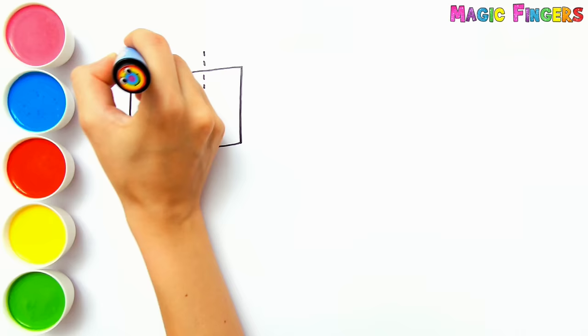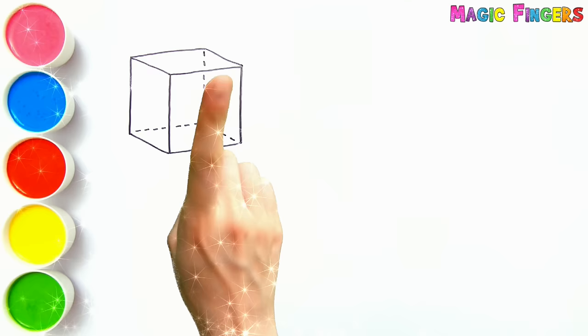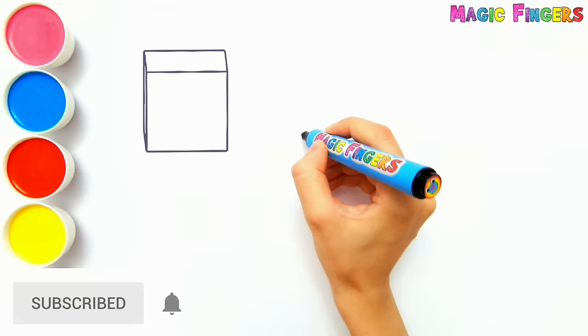First, I'm drawing a cube. You can easily draw 3D geometric shapes with this video. Magic Fingers! Ta-da! Look, the cube is spinning. It is easier to understand how they look in real life.